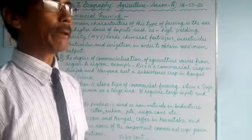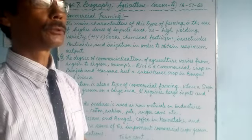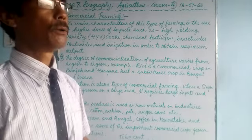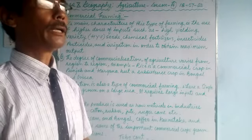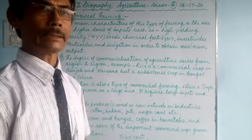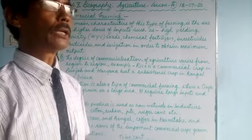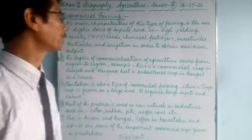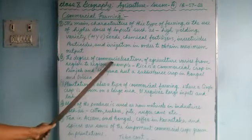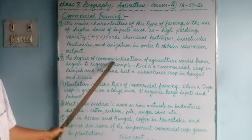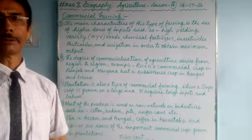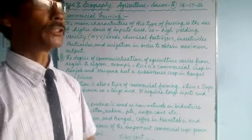Commercial farming aims to obtain maximum output or crops from a large area. The degree of commercialization of agriculture varies from region to region — in different regions the level of commercialization differs.